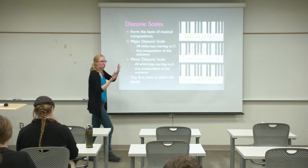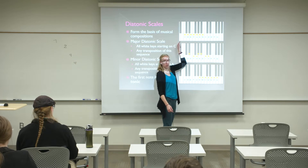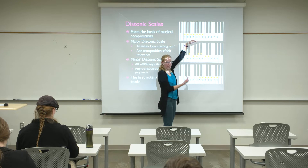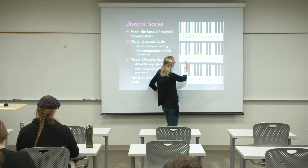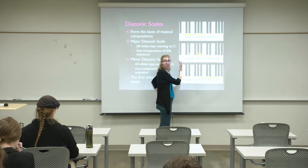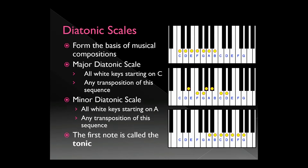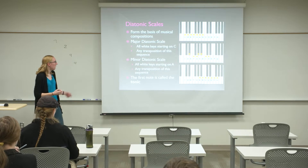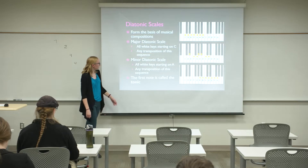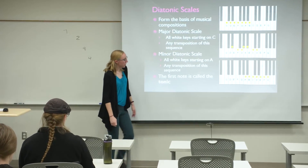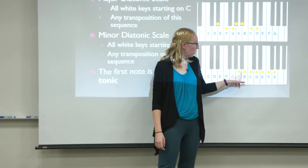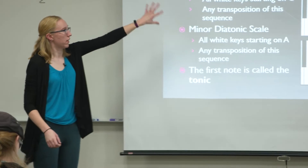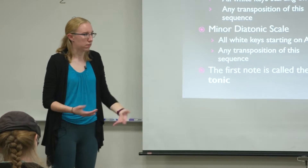If I take all those yellow dots and move them one key to the right, that's still a major scale, just not C major. I moved the dots three spots to the right from C and from D — so those yellow dots outline a different major scale. And then there's also the minor diatonic scale. The A minor scale is all the white keys starting on A. You can slide that any number of keys left or right.